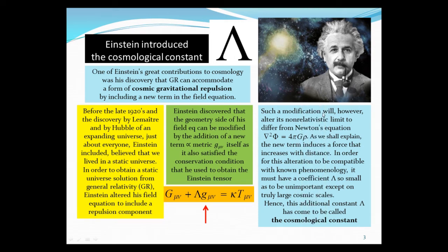Such a modification will alter its non-relativistic limit, so it differs from the Newtonian equations. If you add this term, you won't get the Newtonian equation in the Newtonian limit. The new term induces a force that actually increases with distance. So in order for this alteration to be compatible with known phenomenology, it must have a coefficient lambda so small as to be unimportant except at truly large cosmic distances, hence this term lambda is called the cosmological constant.